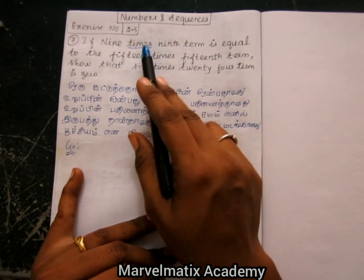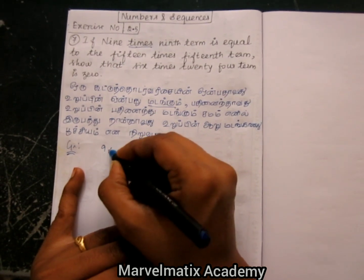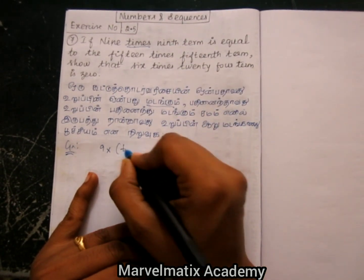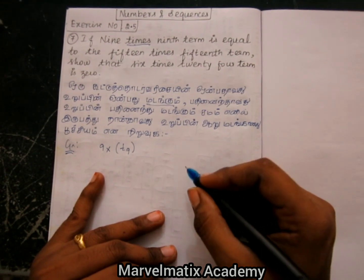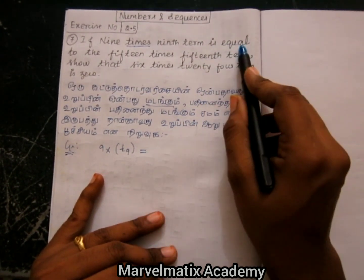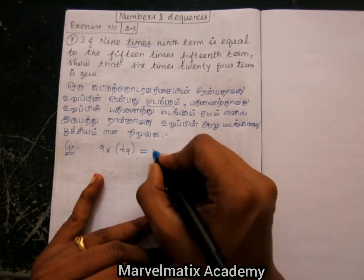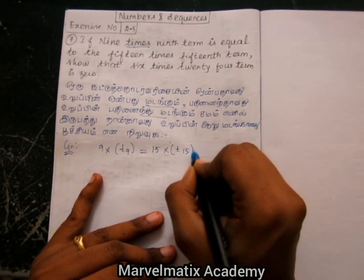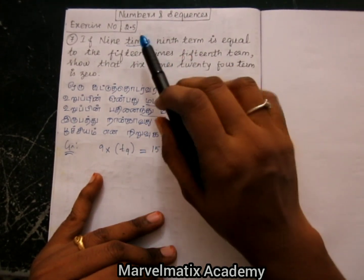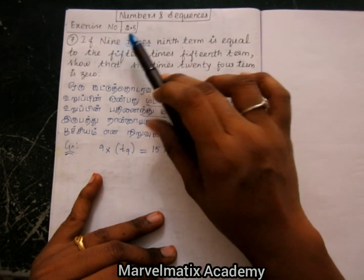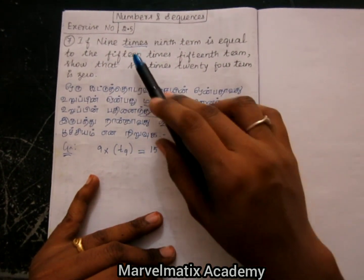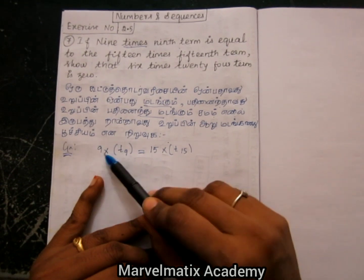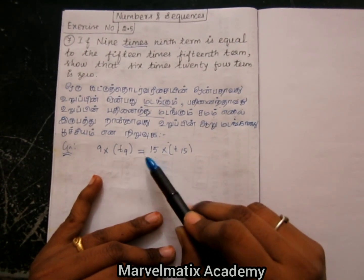9 times — so 9 times, 90 madangu, 9th term. T9 is equal to 15 times, 15th madangu. T15 madangu sumam. 9 times 9th term: 9 into T9 is equal to 15 times 15th term: 15 into T15. So the 90 madangu and 15 madangu sumam is not there.